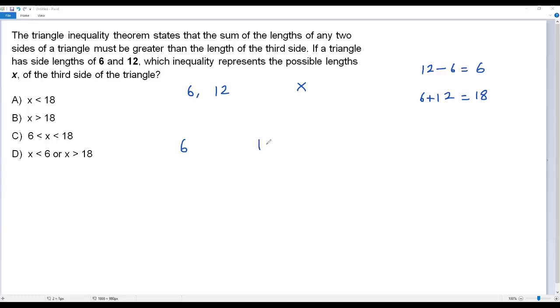So the third length, x, can be any value between 6 and 18. That is, the length of the third side can be any value between the difference of the two known lengths and the sum of the two known lengths. So here, the correct answer choice for this question is option C.